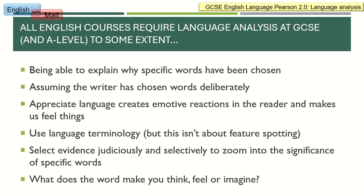Pretty much all GCSE courses, whether that be Lit or Lang, but also A-level English, requires students to be able to think about how meaning is created. When you're dealing with writing, language is going to be the main way that writers create that meaning. Our responsibility as commentators is to zoom in and think about the effects of language choice. Language is an emotive tool — it can help us feel things. We also need to appreciate that writing is a craft, so writers consciously choose words deliberately because they are aware of the effect they want to create.